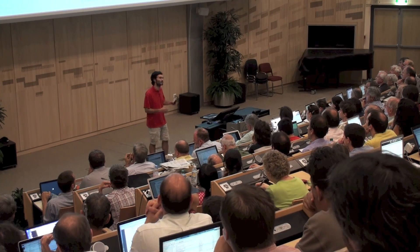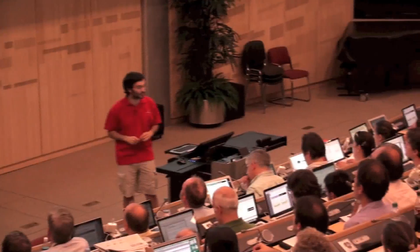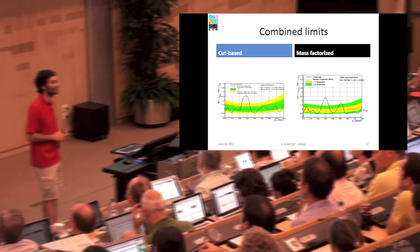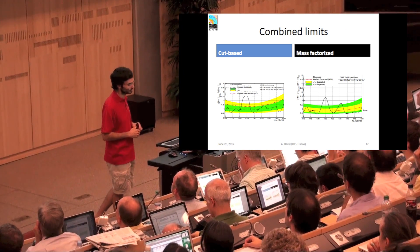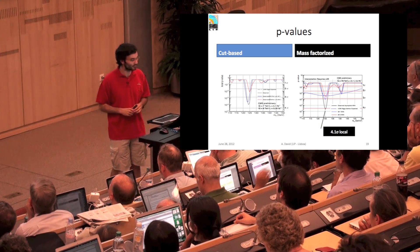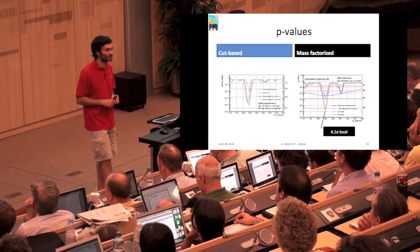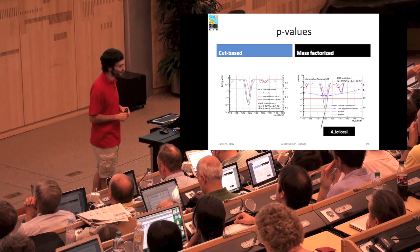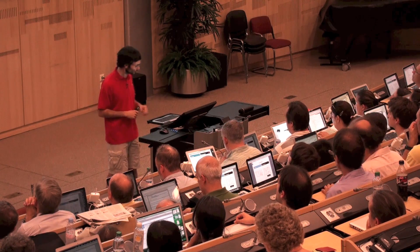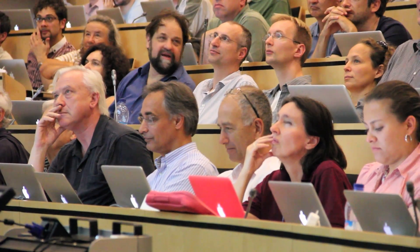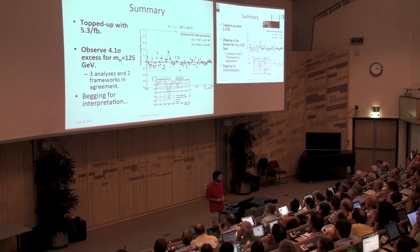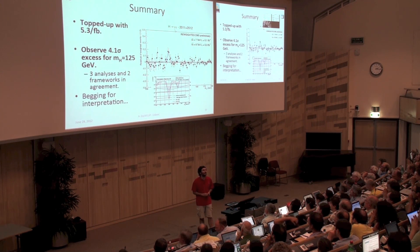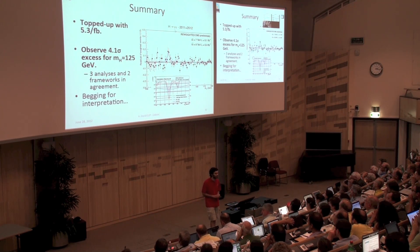Of course, if we think only about 8 TeV limits, it's a much larger gain. These are the combined limits for 7 and 8 TeV. You have on the left the cut-based analysis result, and on the right the mass factorized analysis result. If we move to the P values, on the left is the result of the cut-based. Both plots are broken down into 7 and 8 TeV and the combination. You see in the mass factorized something like 4.1 sigma local P value. We've been able to top up with 5.35 inverse femtobarns. We observe a 4.1 sigma excess at 125 GeV, and this is across three different analyses performed in two independent frameworks.